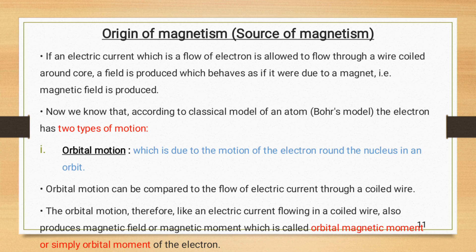Now we know that according to classical model of an atom, Bohr's model, the electron has two types of motion. First one is orbital motion and second one is spin motion. Orbital motion is due to the motion of electron around the nucleus in an orbit.